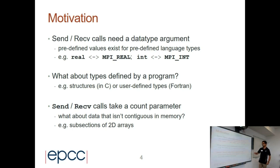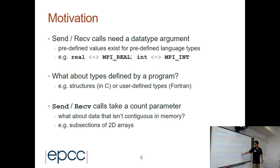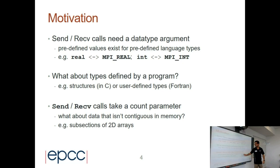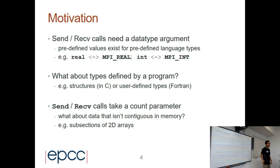Another motivation is that you have seen that for send operations and collective operations, you should specify the count. But if I always want to send four elements, I can define a data type that means, for example, four elements of integer or four elements of float. I can define this with derived data types.